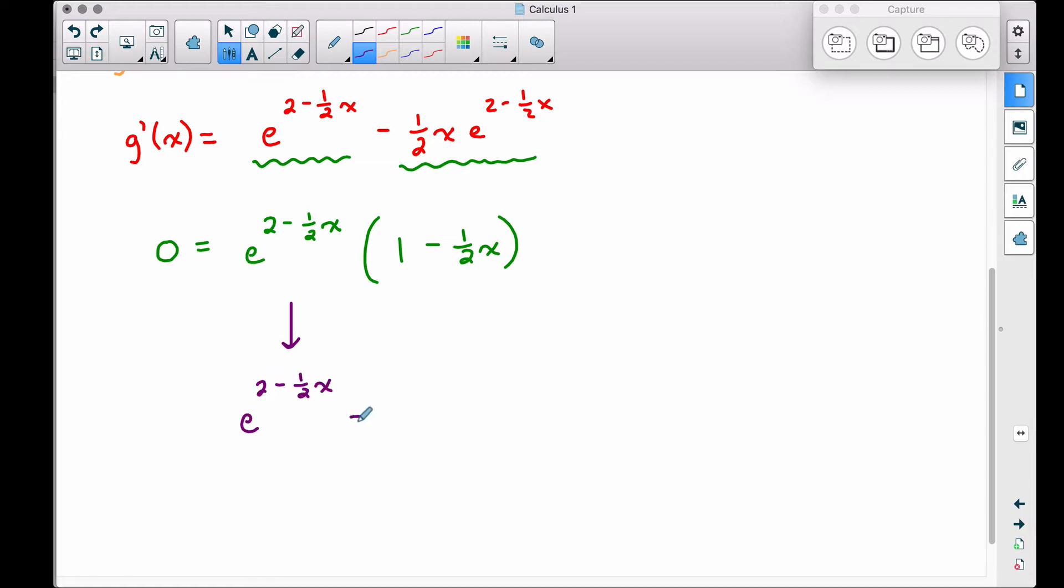So e to this stuff equals zero, well, that's impossible. e to this power, it can never be equal to zero. To show you that further, if you did want to try to solve this, if we take the natural log of both sides,